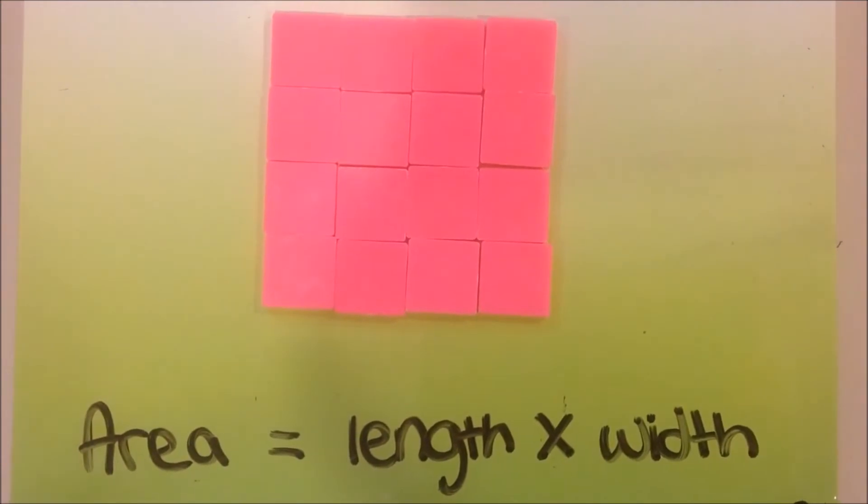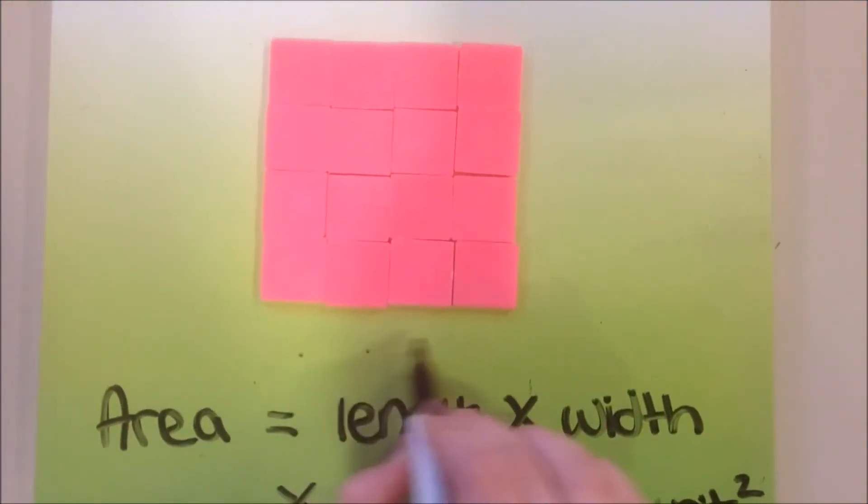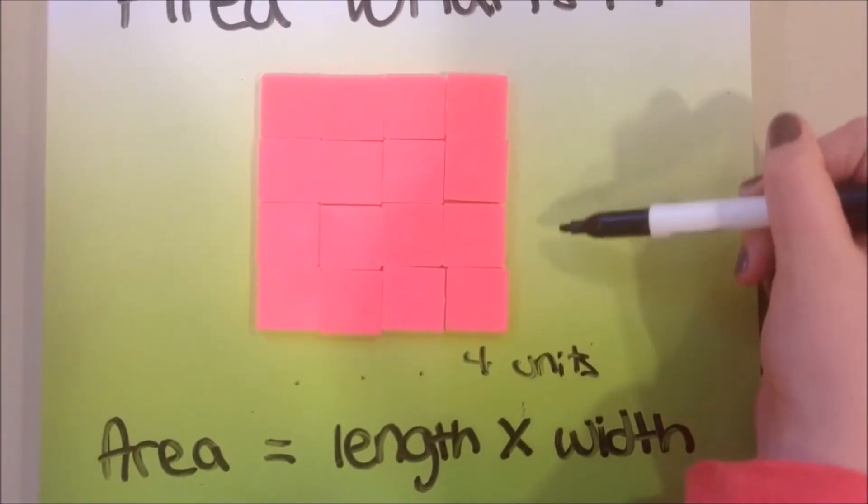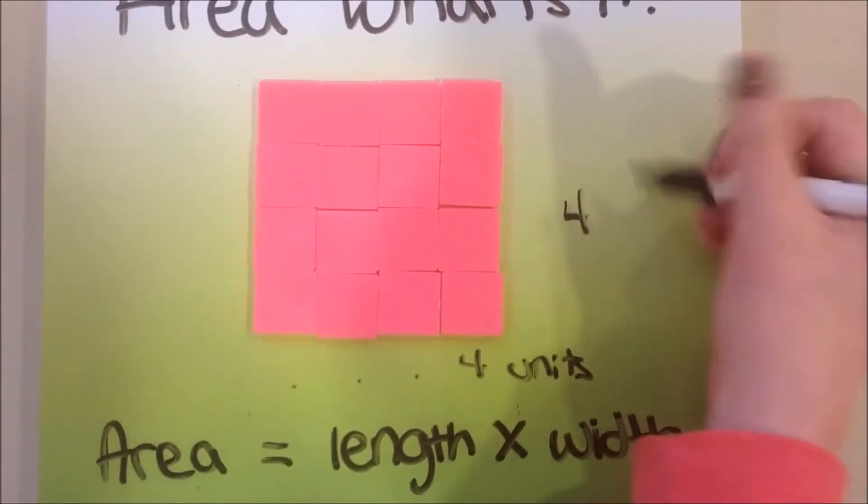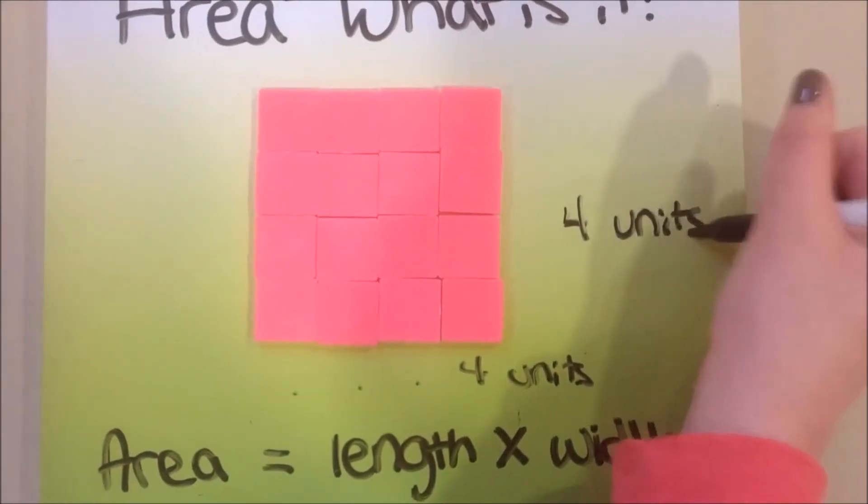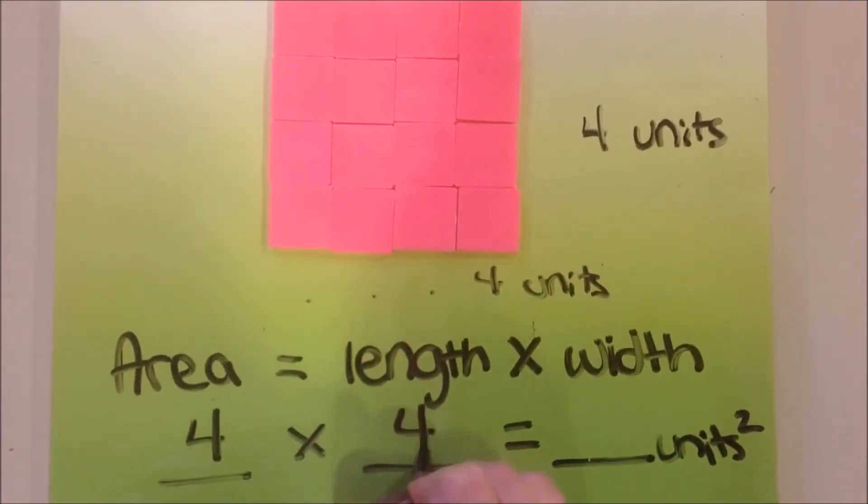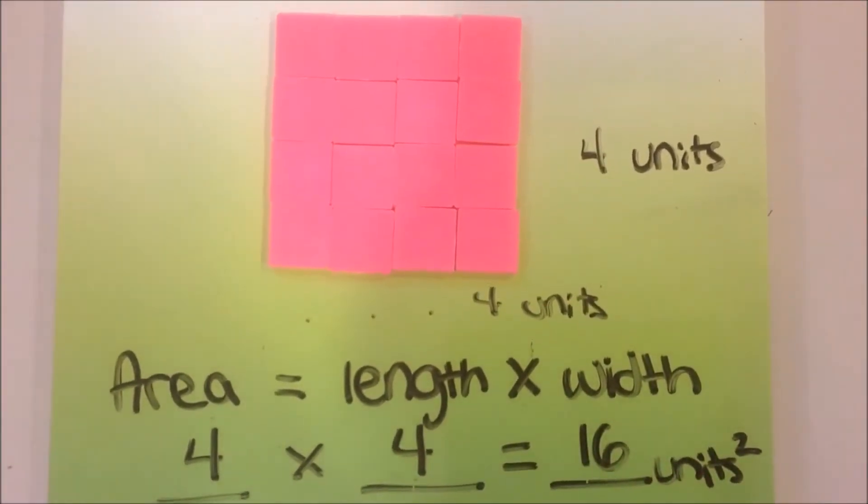So on this rectangle, the length is 1, 2, 3, 4 units, and the width also is 1, 2, 3, 4 units. So to find the area of this rectangle, we will multiply 4 times 4 to get an area of 16 units squared.